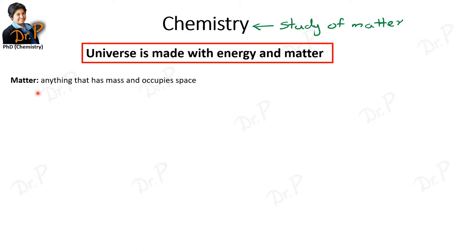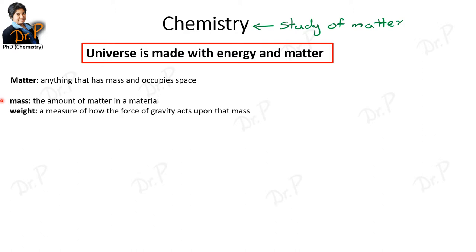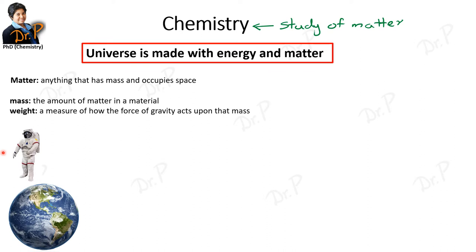What exactly is matter? We define matter as anything that has mass and that occupies space — two things: mass plus occupying space. In general communication we use the terms mass and weight as the same idea, but in science mass and weight mean two different things. Mass is the amount of matter in a material; weight is how the force of gravity acts on that mass.